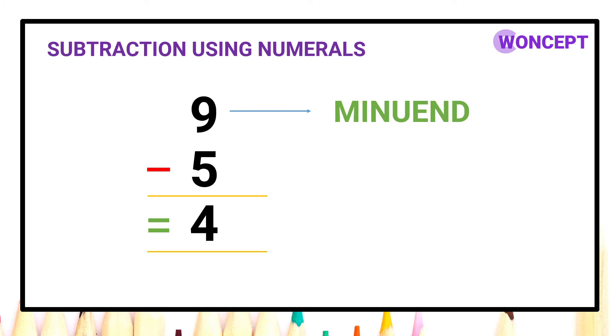Now let us understand few terms of subtraction. 9 is called minuend, 5 is called subtrahend, and the answer which we get after subtracting two numbers is called the difference. So here in this example, 9 is the minuend, 5 is the subtrahend and 4 is the difference.